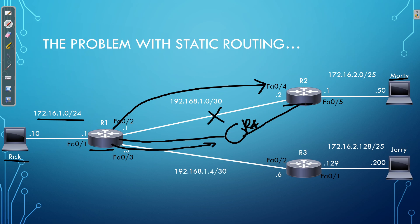We would have to do the exact same thing on R2 — tell R2 that if you want to reach Rick, you have to forward the traffic towards R4. As you can see, it's an administrative nightmare to configure routing with static routing, especially when we have many networks and many routers in our enterprise. They simply don't react dynamically to changes in our topology.